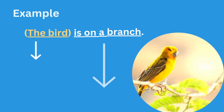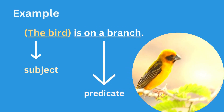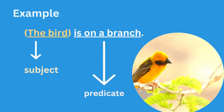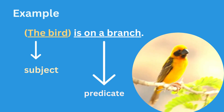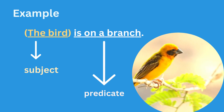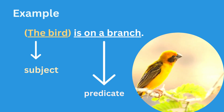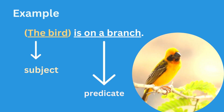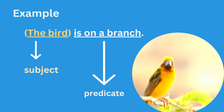Let's look at two more sentences. This sentence says: the bird is on the branch. This sentence is about the bird, so the subject of the sentence is the bird. What is the bird doing? It is on the branch, so is on the branch is the predicate in this sentence.